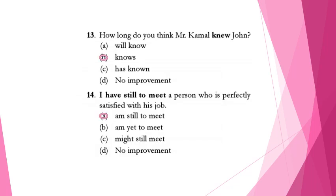Example 13: 'How long do you think Mr. Kamal knows John?' — both clauses are in simple present tense, which is correct. Example 14: 'I have still to meet a person who is perfectly satisfied with his job' — wrong. The right helping verb is 'am,' not 'have.' 'I have a car' uses 'have' for possession, but to show position or a future arrangement, we say 'I am still to meet a person,' so the right phrase is 'I am still to meet.'